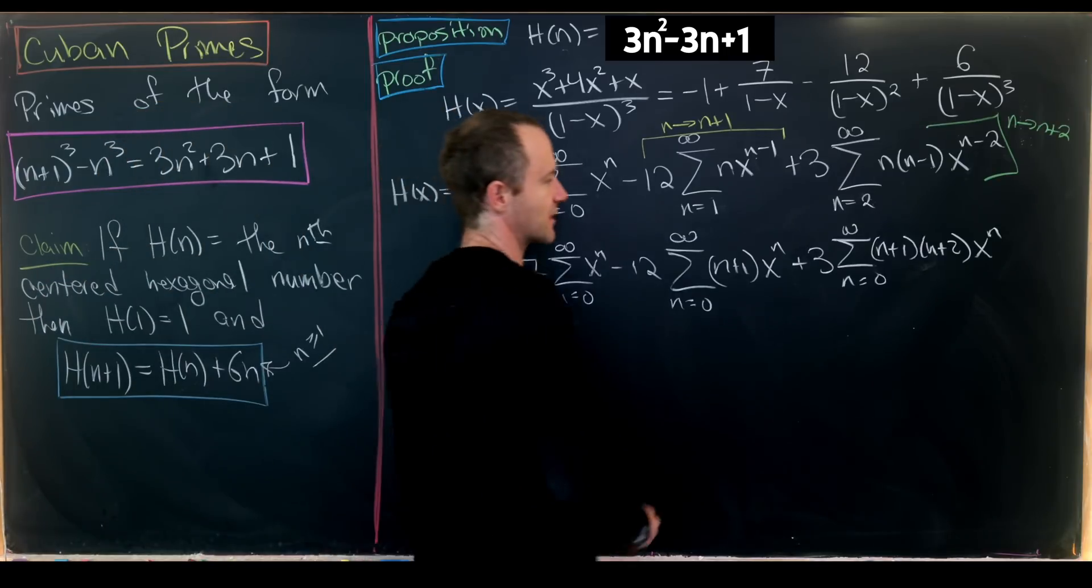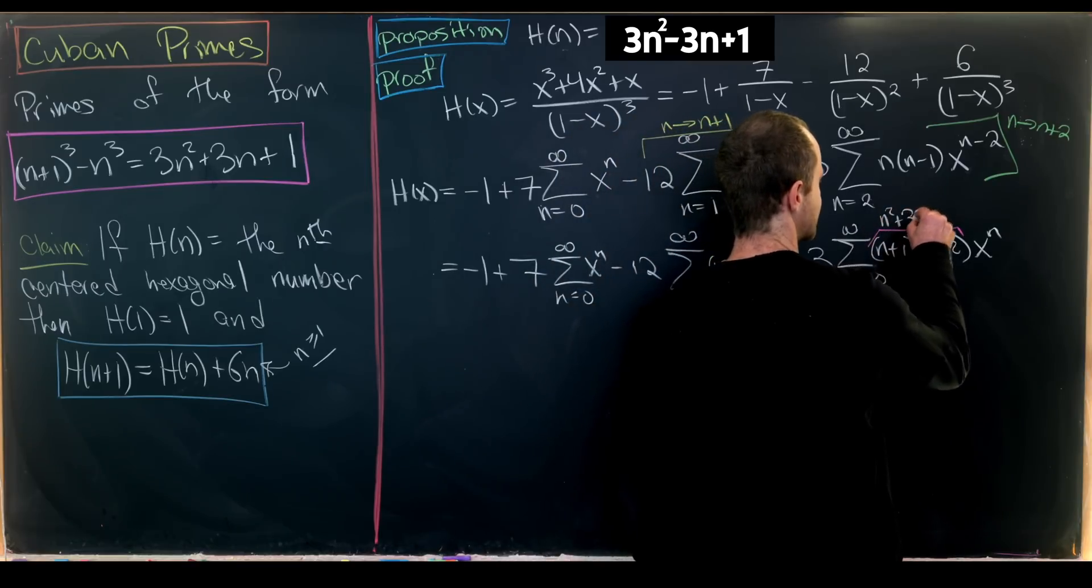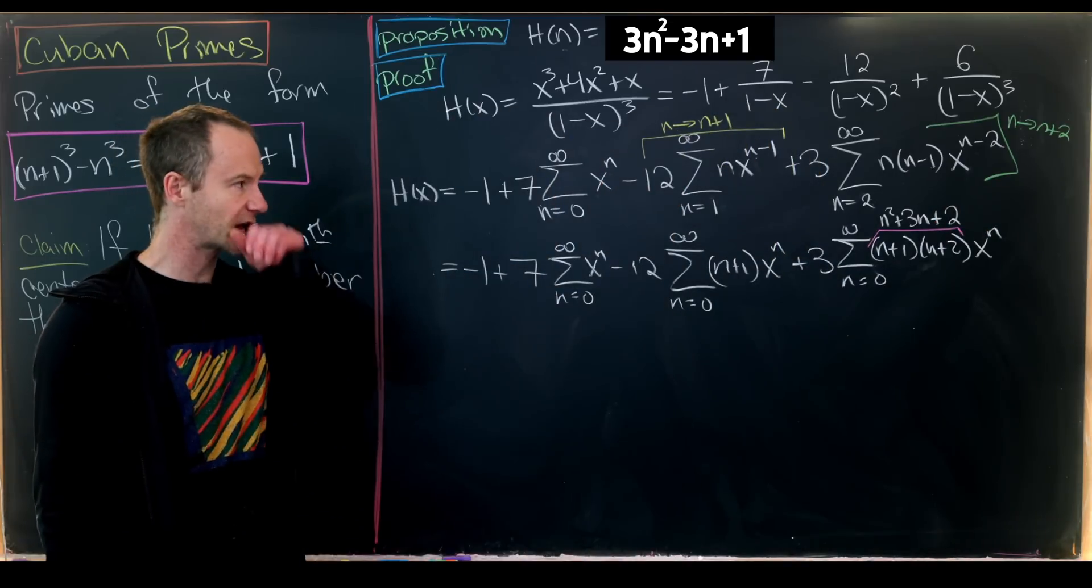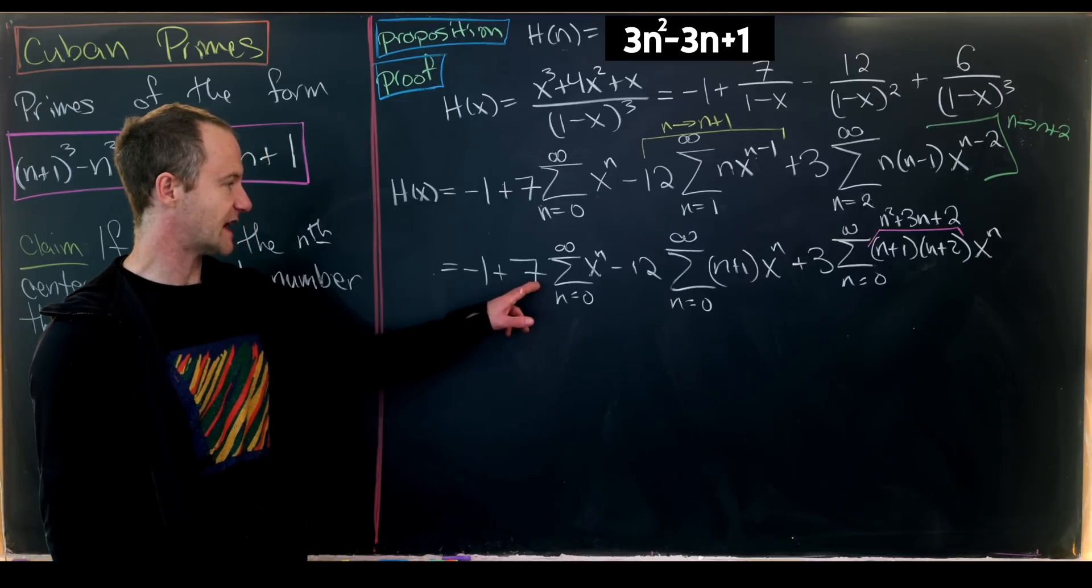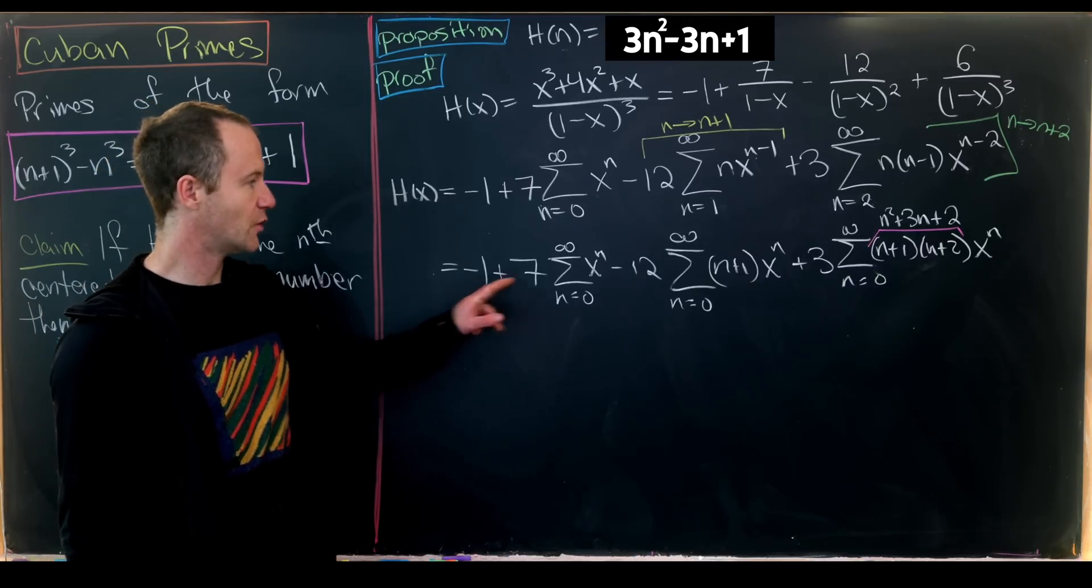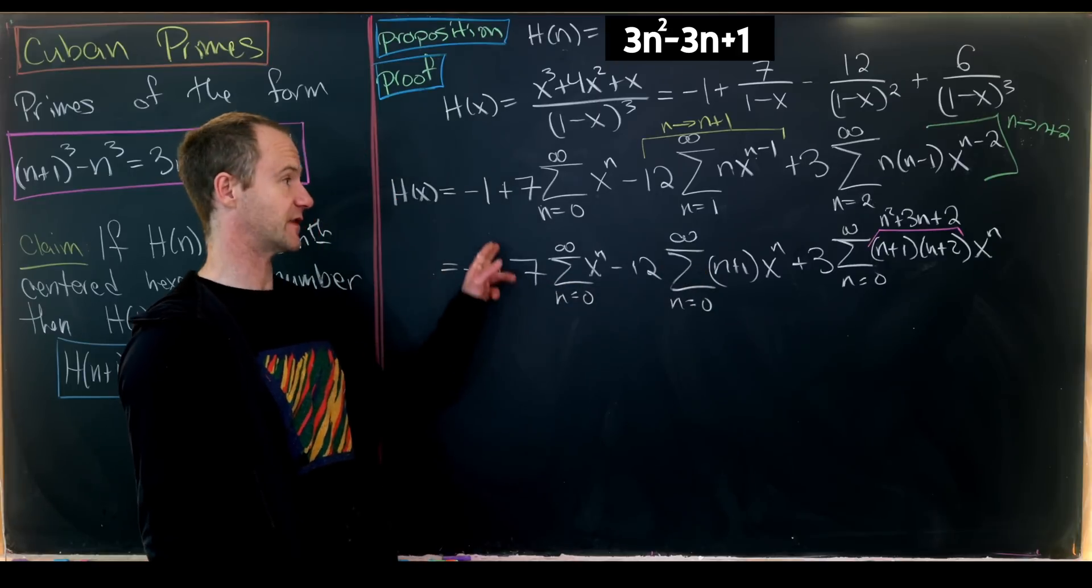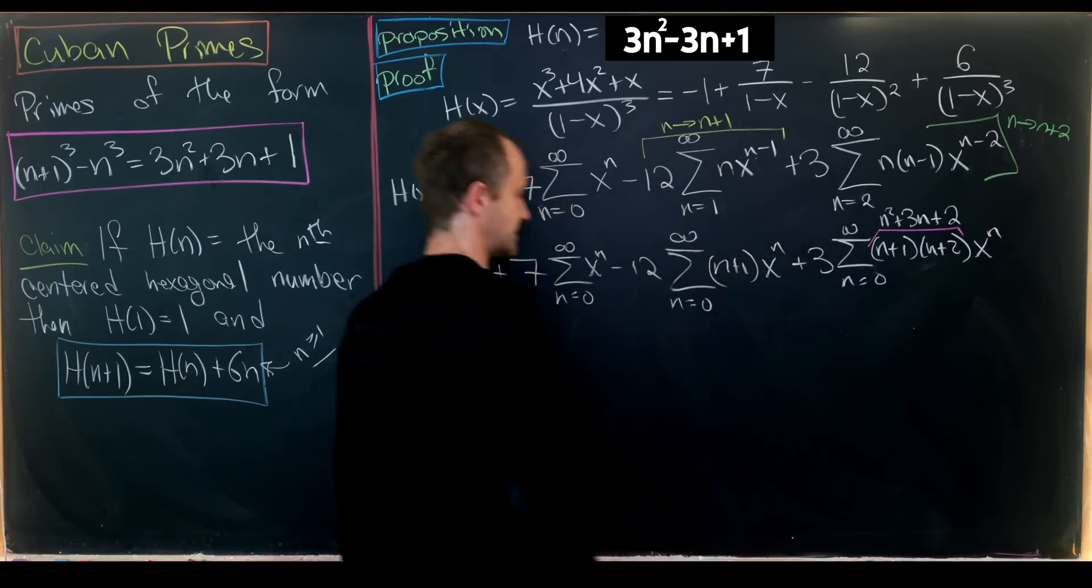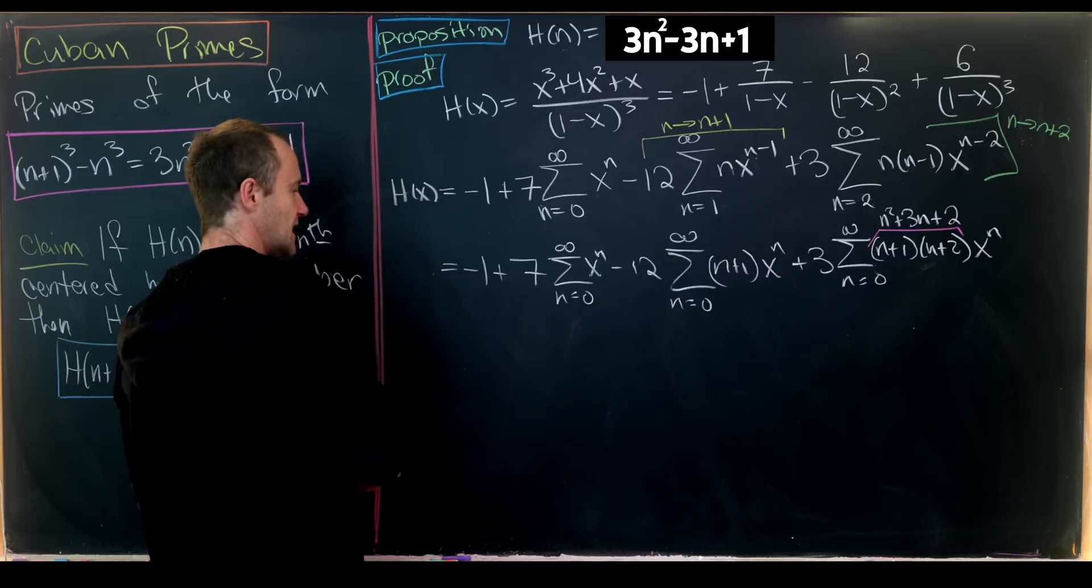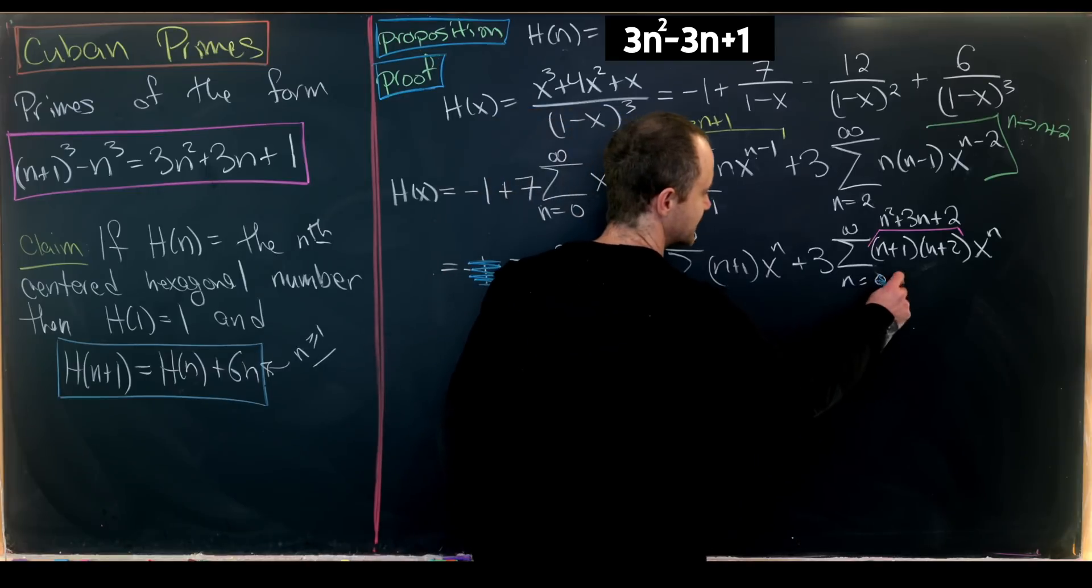Now we combine everything. (n+1)(n+2) multiplies out to n² + 3n + 2. Looking at constant terms: 7 - 1 = 6, then 6 - 12 = -6, then -6 + 6 = 0. All constant terms cancel, so we can start all sums at n=1 instead of 0.